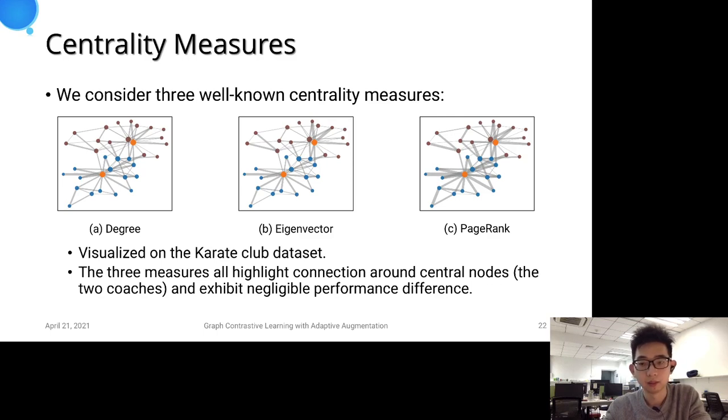It is seen that the three measures all highlight connections around the two central nodes shown in orange that are the two coaches of the club. Further experiments also demonstrate negligible performance difference among the three centrality measures.